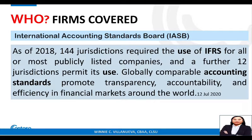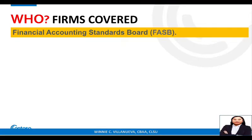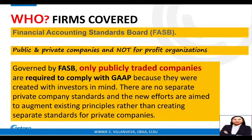As of 2018, out of 166 jurisdictions, 144 require the use of IFRS for all of their publicly listed companies; those are required, and the others are permitted. As for the FASB, it covers private, public, and not-for-profit organizations in the US. Compliance is normally required for publicly traded companies, while others are permitted.